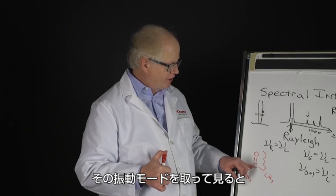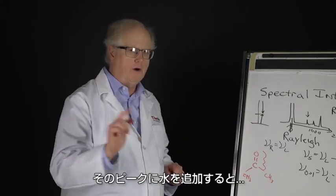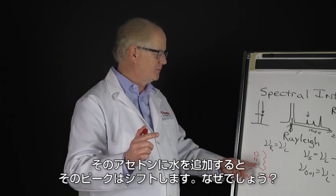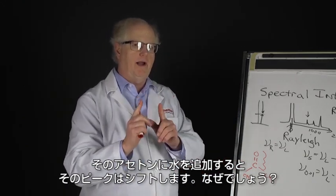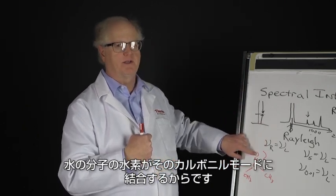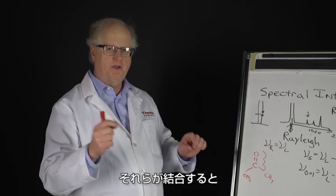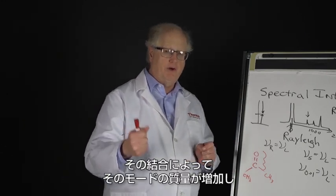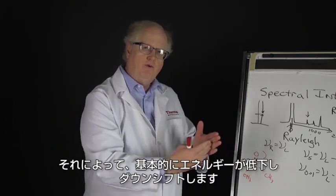So you have the acetone molecule and you look at that vibrational mode right there. If you take and look at that vibrational mode, you'll get a single peak for it. If you add water to the peak - or water, excuse me, to the acetone - that peak shifts. Why? Because the water molecule hydrogen bonds to that carbonyl mode. When it does that, when it bonds to it, it actually increases the mass of that mode, it lowers the energy, in essence, and it downshifts.